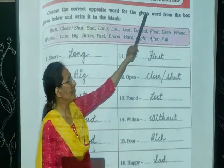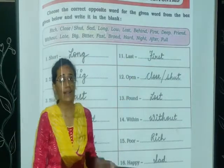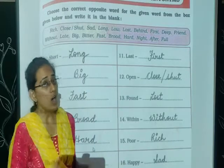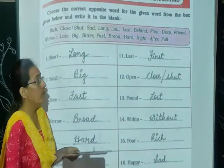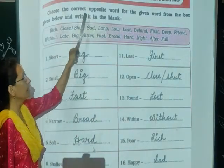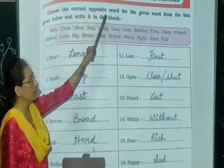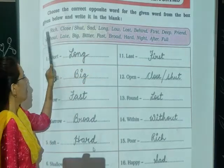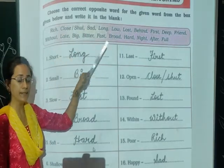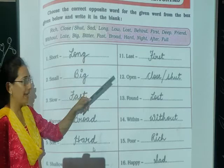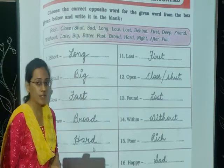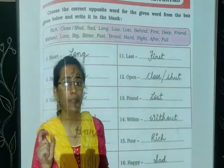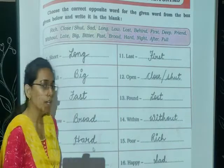Our chapter number 29 is Antonyms. Now, what is an antonym? Antonyms means the opposite word. Choose the correct opposite word for the given word from the box given below and write it in a blank. From that box, you have to choose the opposite word of the given question.